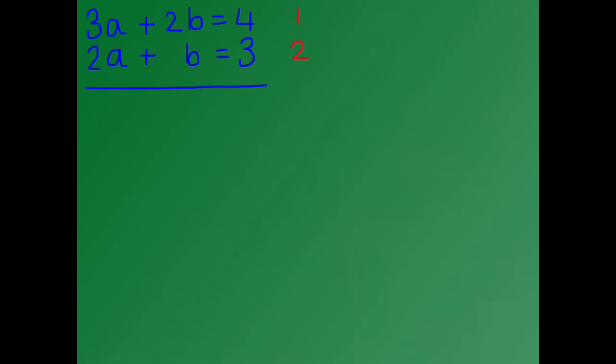To solve this question we have to make one set of the coefficients the same. So the number in front of the a's has to be the same, or the number in front of the b's has to be the same. We can multiply one or both of the equations so that we get one set of the coefficients to be the same.